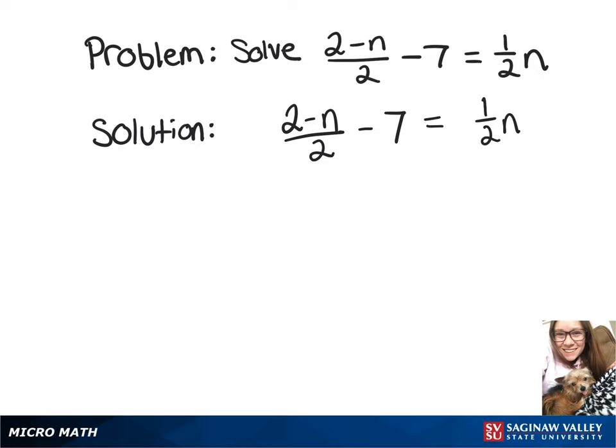To make this easier to work with and get rid of those fractions, we're going to multiply both sides by 2. That'll leave us with 2 - n - 14 = n.